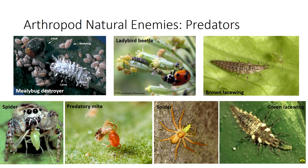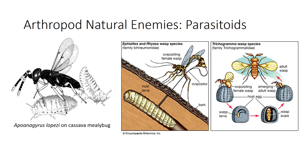Entomophagous insect predators may feed on several or all stages, from egg to adult, of their prey, and each predator usually consumes several individual prey organisms during its life, with the predaceous habit often characterizing both immature and adult instars.